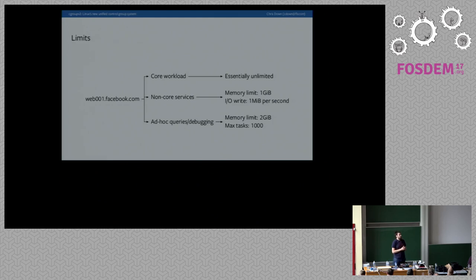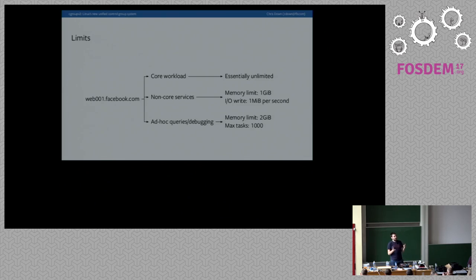If you've had any interaction with cgroups, you've almost certainly been interacting with version one. Version two has been in development for about five years and only just got stable in the Linux kernel. But even on recent kernels, version one is typically what's mounted by default. The reason is that the actual changes are backwards incompatible. The fact that we typically boot with your init system only mounting the version one hierarchy is a testament to why I'm doing this talk — as a sell to this room of container experts about why you should care about cgroup v2.